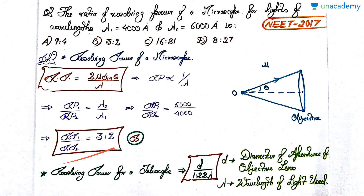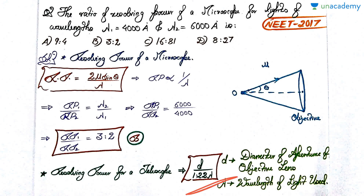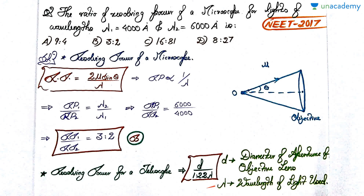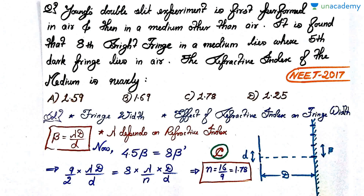Similar questions can be asked for the resolving power of a telescope. The formula there is slightly different: RP = D / (1.22λ), where λ is the wavelength of light and D is the diameter of the aperture. Angle and refractive index don't matter for telescopes. If a question gives only λ, the method for finding the ratio remains exactly the same.